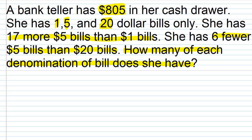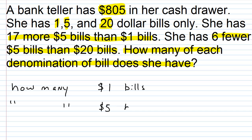Let's write out what we're looking to find: how many $1 bills, $5 bills, and $20 bills. We want to let X equal one of the amounts — either how many $1 bills, how many $5 bills, or how many $20 bills she has. When you have a comparison with three things involved, you usually want to look to see if one of those is involved in both comparisons.